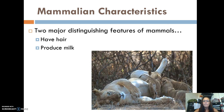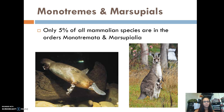The two major distinguishing features of mammals are having hair and producing milk. No other animals do this — reptiles don't, birds don't — so mammals are very unique in that they're the only ones that do these two things.